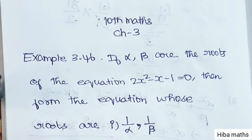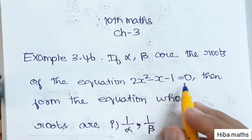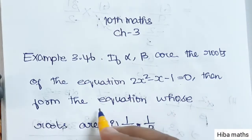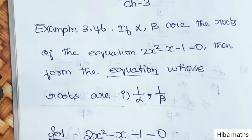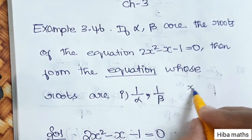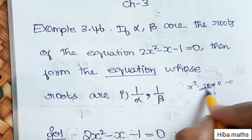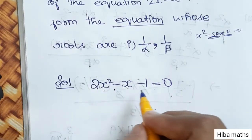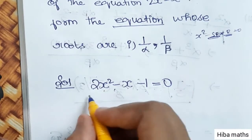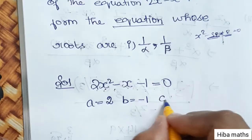Welcome to Hebermax 10th standard math, Chapter 3, Example 3.46. If alpha and beta are the roots of the equation 2x² - x - 1 = 0, then form the equation whose roots are: (i) 1/alpha, 1/beta. To form the equation in general format: x² - (sum of roots)x + (product of roots) = 0. From 2x² - x - 1 = 0, a = 2, b = -1, c = -1.